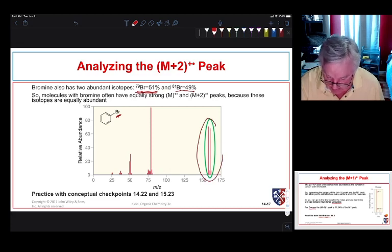So when we see this particular pattern, the M and the M plus 2 peak are almost the same size, we want to be thinking bromine.